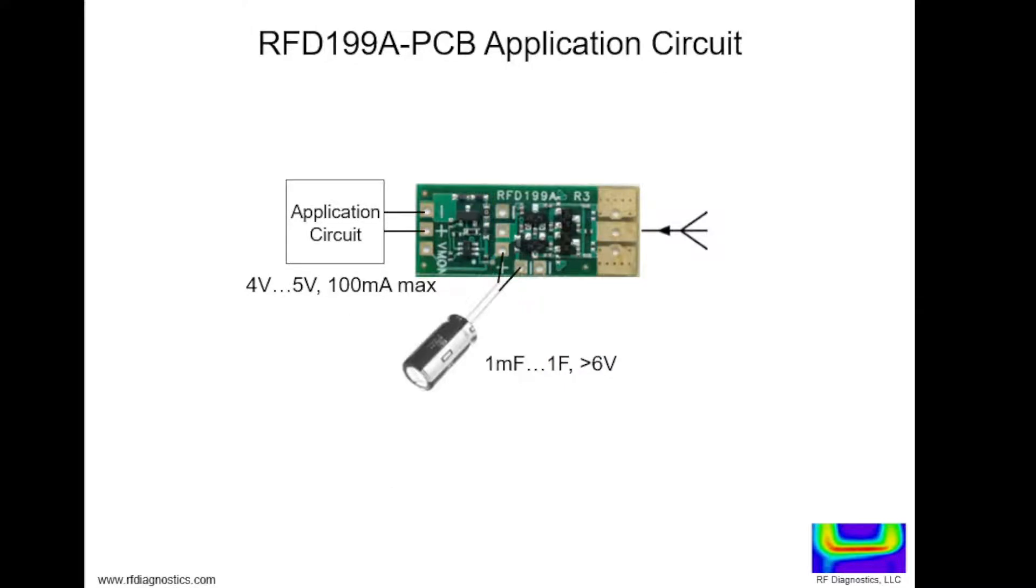This figure shows a typical application circuit for the RFD199A. You connect an antenna to the RF input. There's ground on either side and this input is designed for an SMA connector.